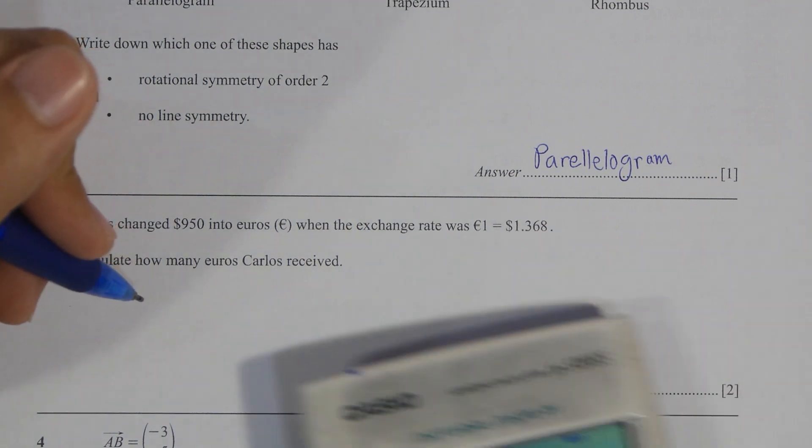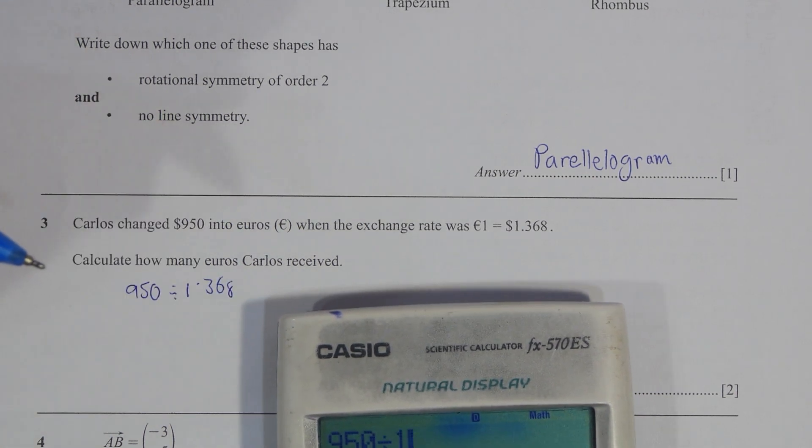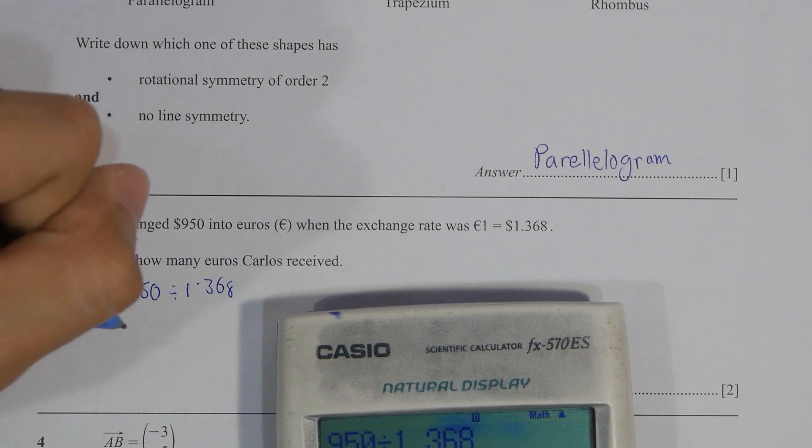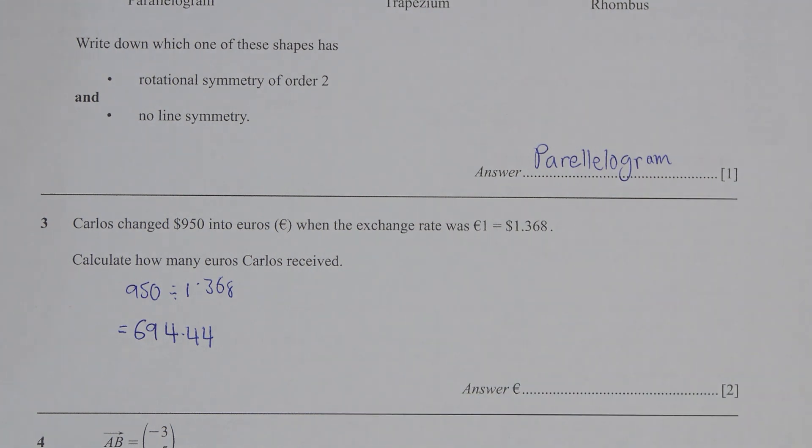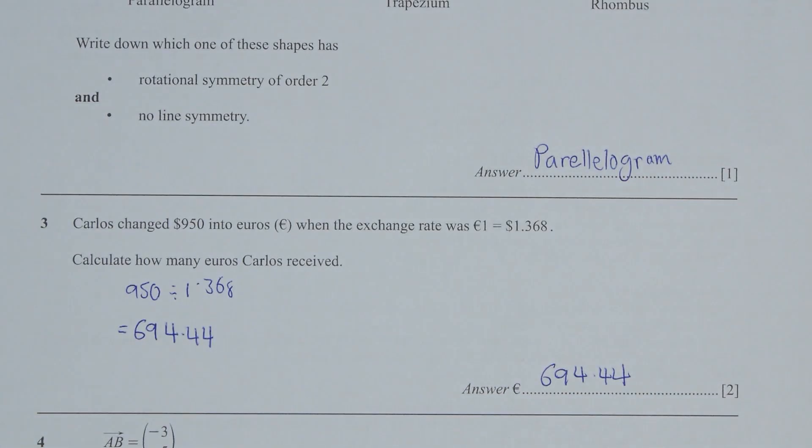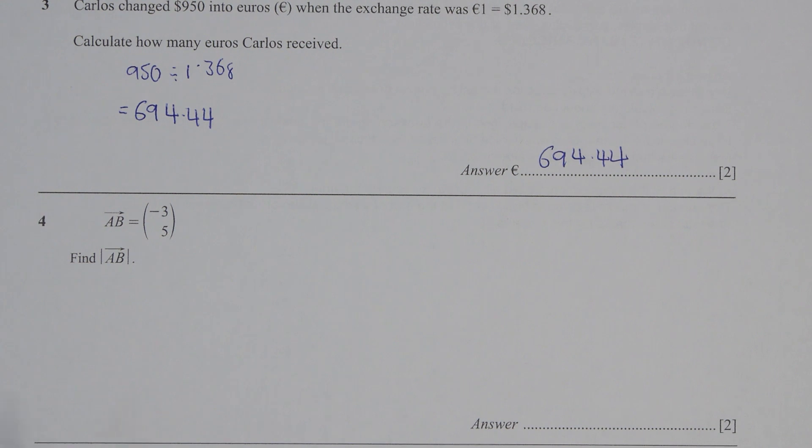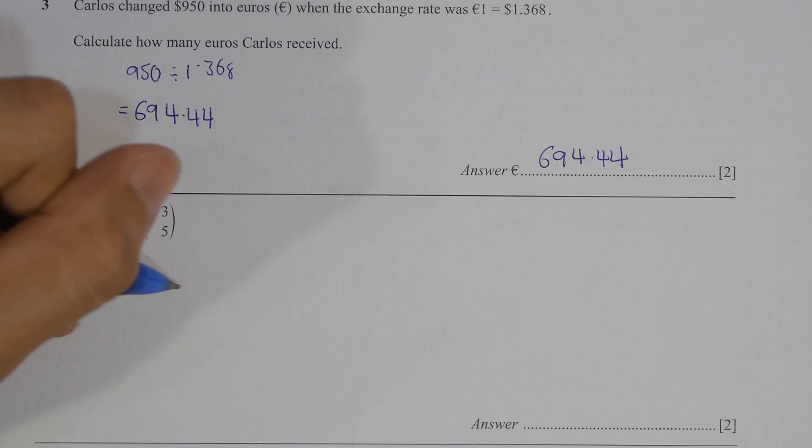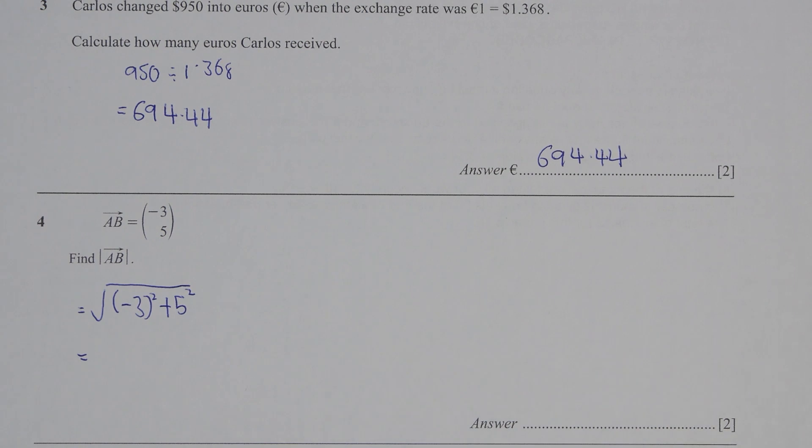Number three, change 950 USD into euros at the rate of 1 euro equals 1.368. Simply take 950 divided by 1.368, then you get results of 694.44 euros. For number four, this one is actually the Pythagorean theorem. To find AB's value, simply take square root of negative 3 squared plus 5 squared, so the result will be 5.83.